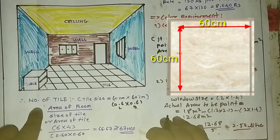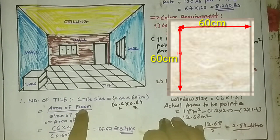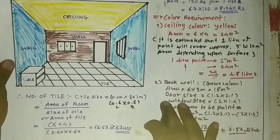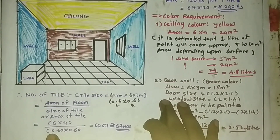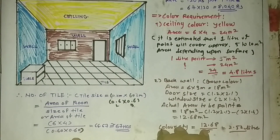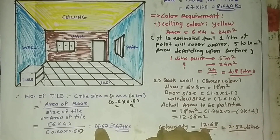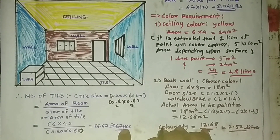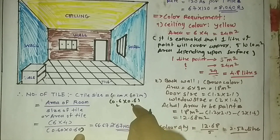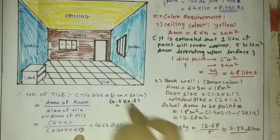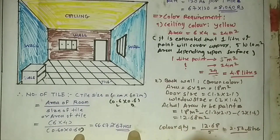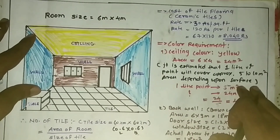The area of the room is 6 by 4 meters, so area = 6 × 4. The area of one tile = 0.6 × 0.6. Completing this calculation gives 66.67, which rounds to 67 tiles required. Note that as you reduce the tile size the number of tiles increases, and as you increase the tile size the number decreases.